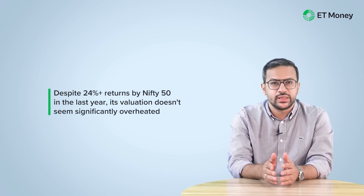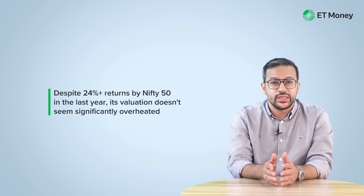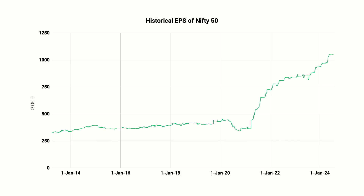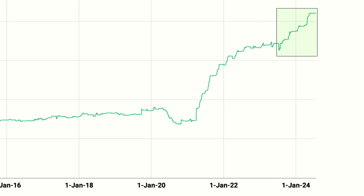So from a PE ratio perspective, despite the 24%-plus returns that Nifty 50 has generated in the last one year, its valuation still doesn't appear to be significantly overheated. That's because the growth seems to have followed the earnings. In FY24, companies in the index reported an earnings growth of approximately 14.86%. So even though the index rallied, earnings also grew, which prevented it from venturing into overvalued territory.